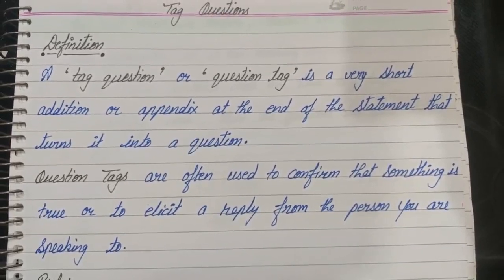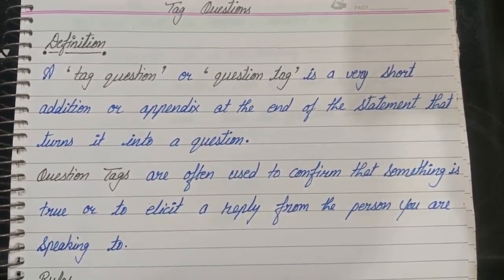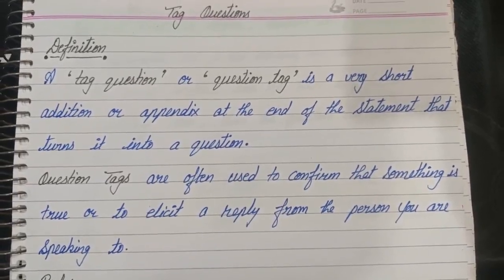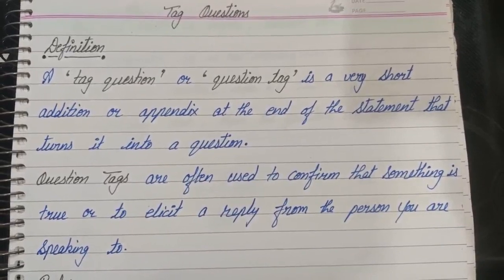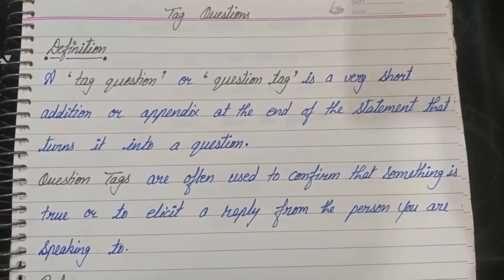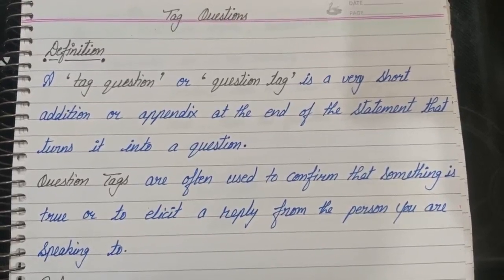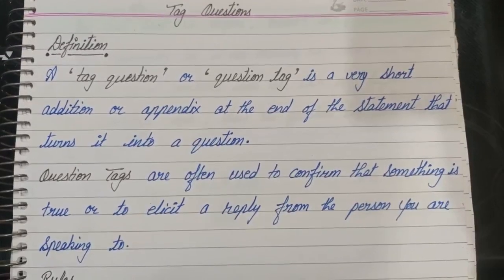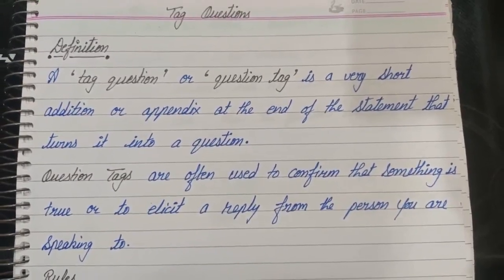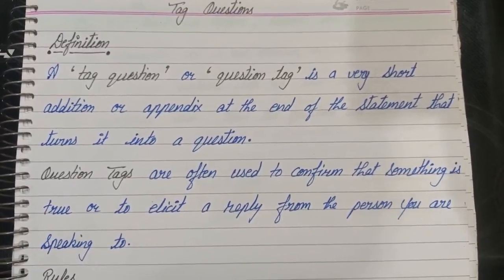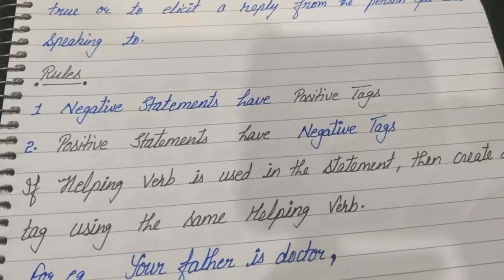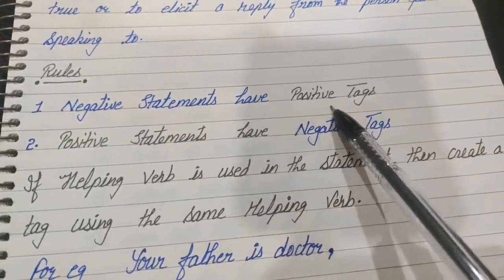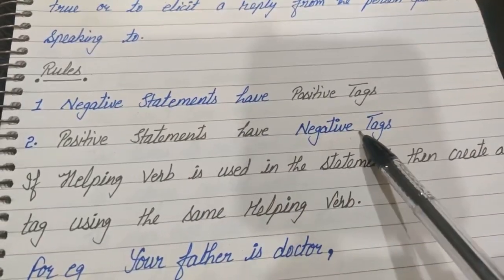When a statement is being said, we add some words to it. Why do we do so? Because we want to draw a reply — we want to get a reply from the person whether the given statement is true or not. That's why we add a question tag to it. Now let's learn the rules. Negative statements have positive tags, and positive statements have negative tags.